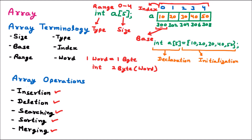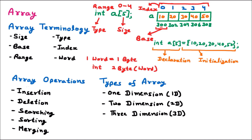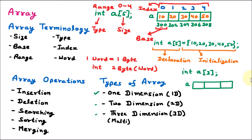Now we discuss types of arrays. There are three types: 1D (one-dimensional), 2D (two-dimensional), and 3D (three-dimensional) array. The 3D array is also called a multi-dimensional array. For a 1D array, we declare: int a[3] — meaning size is 3. In memory, three blocks are reserved with addresses in sequential order. Index values start from 0 and go to 2. This is the one-dimensional array — like a single straight line.